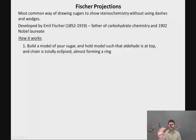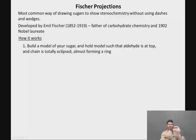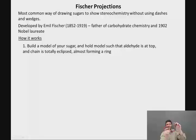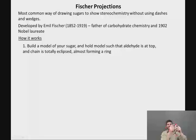In order to get to the Fischer projection, we want to hold our model such that the aldehyde is at the top and the chain is totally eclipsed. I'm going to rotate all of these bonds around so that we're in the eclipsed conformation, and as you can see, we are almost forming a ring. The CH2OH is on the bottom and the aldehyde is at the top, and when you've made the correct model for a Fischer projection, it looks like it wants to form a 5-membered ring, although obviously it doesn't.